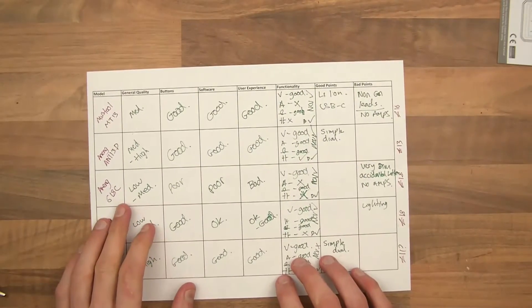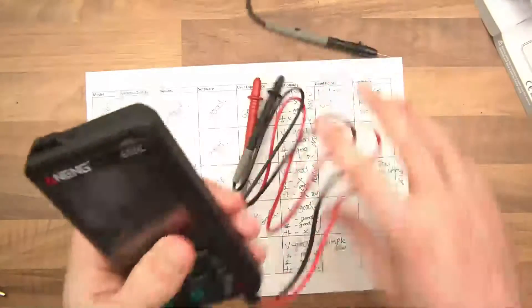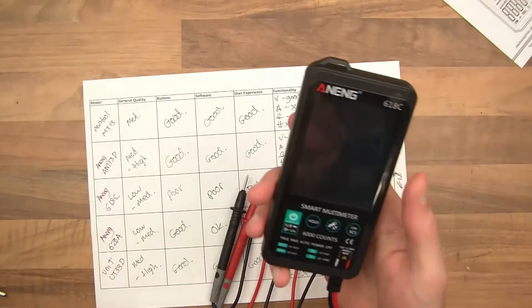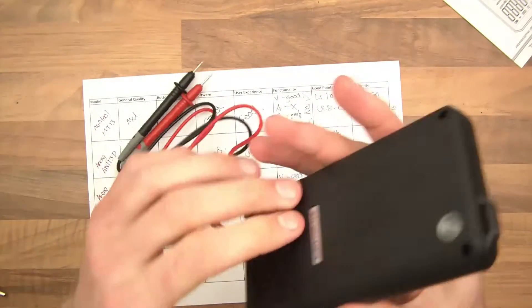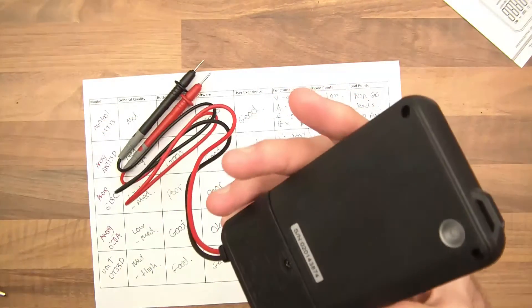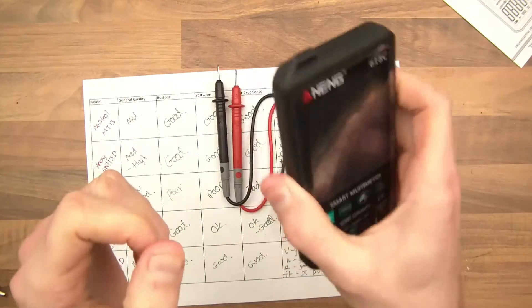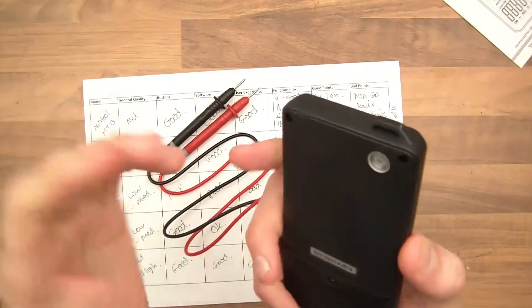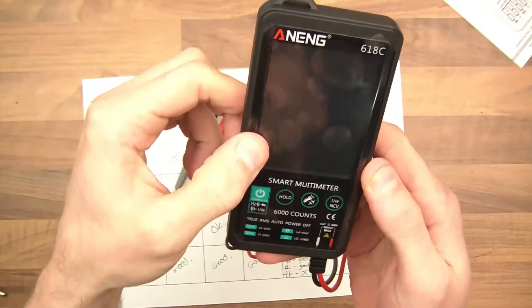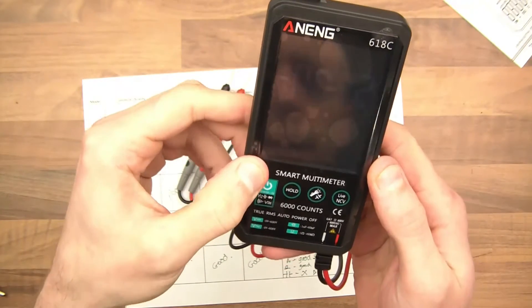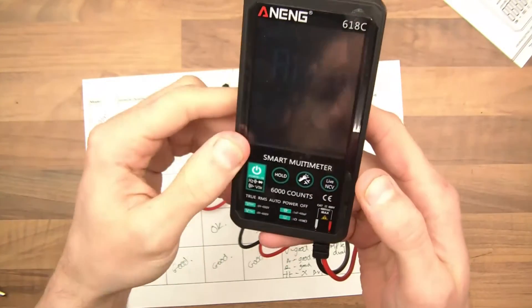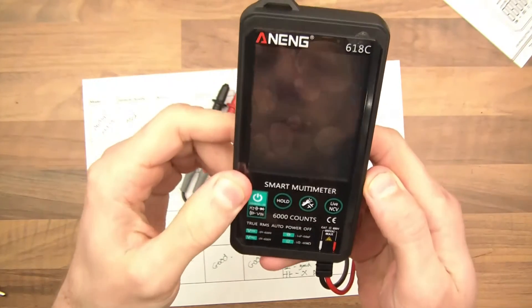And the next one is the Anang 618C, which is this one. Now, I don't have a lot of good things to say about this one. So the build quality is quite poor. The plastic here isn't flush. It feels poor. It has an LED to presumably help you see what you're doing, but the LED is so dim that it's pretty much useless. When you press on the screen, it's not glued down properly or something, and there's a bit of play in it. The buttons are all over the place. As you can see there, I'm not even pressing the button, and it clicks. It's pressing one.